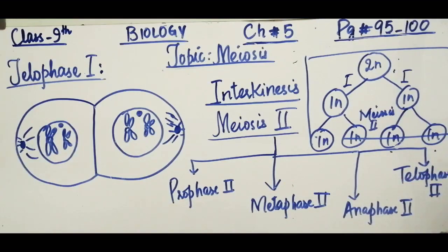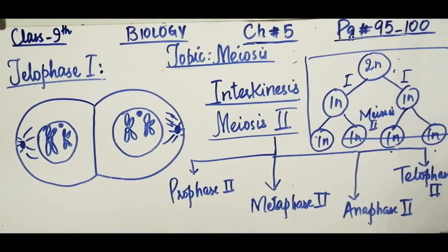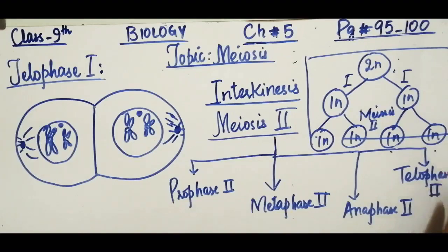This is the end of today's lesson about meiosis, which has two stages: Meiosis I and Meiosis II. For your home task, watch this video and write the answers properly on your loose sheets. Thank you very much. Allah Hafiz.